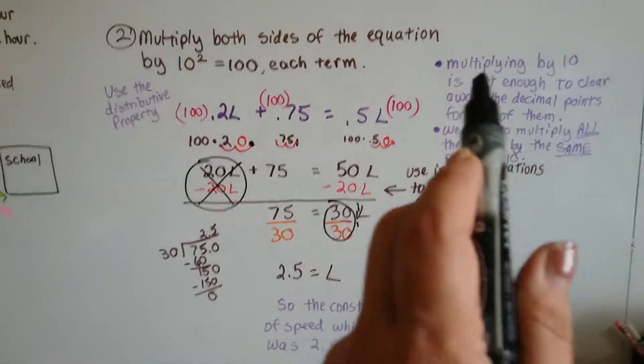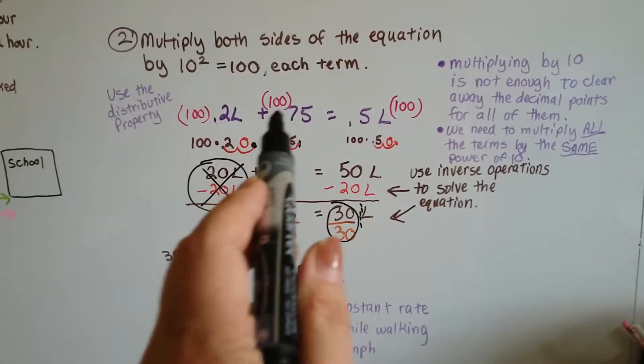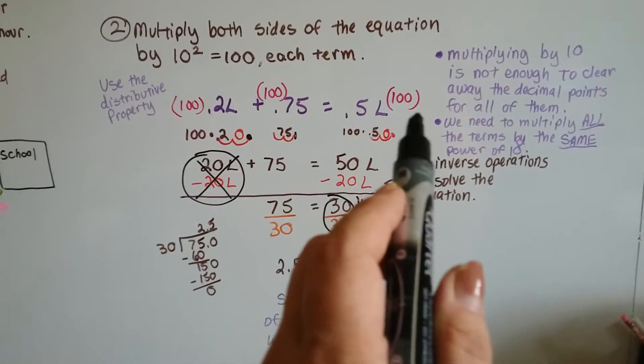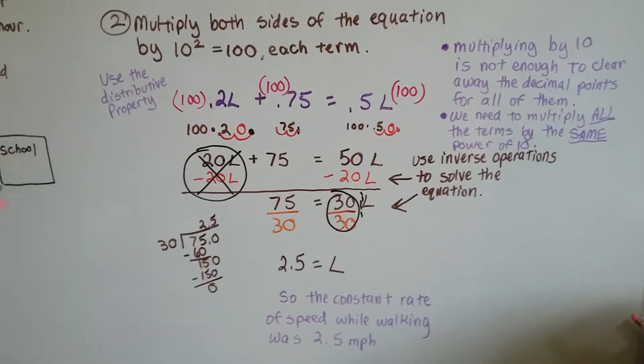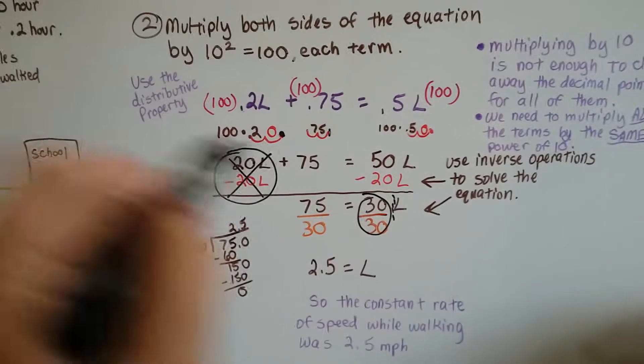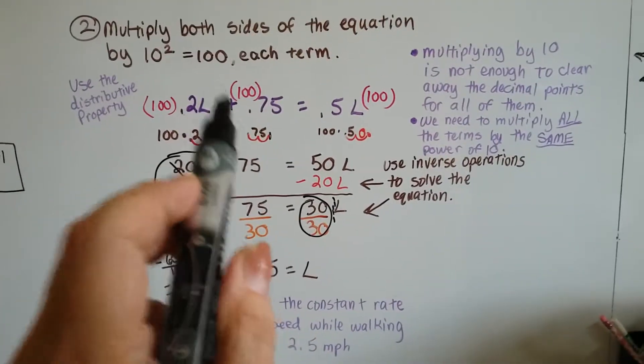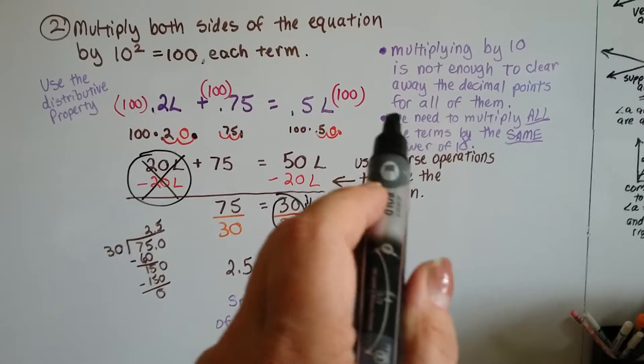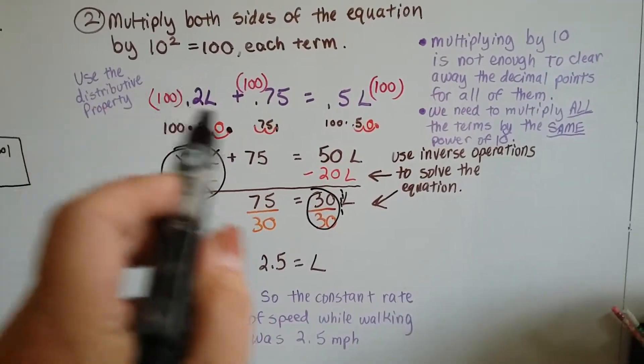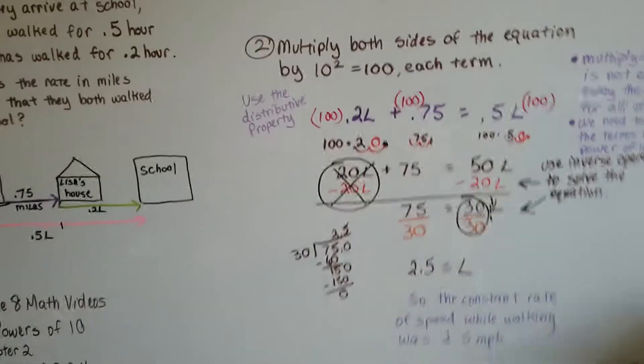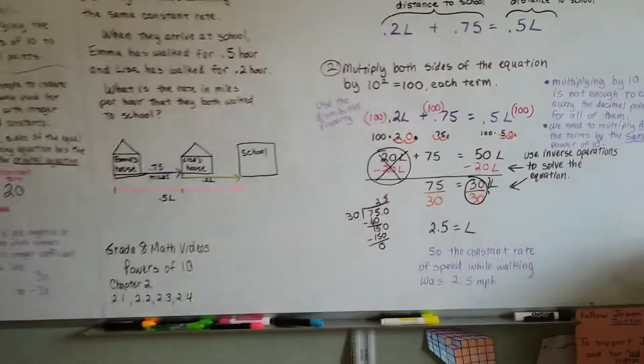And make sure that when you're multiplying by the power of 10 that you're doing it enough to clear all the decimal points. So even if this one just needs one 10 to be multiplied to clear that decimal point, this one didn't. And they all need to be multiplied by the same power of 10. So it had to be bumped up to 100 so that it could be moved over. That's the biggest thing you've got to remember.